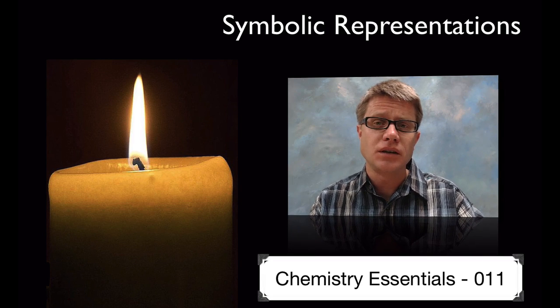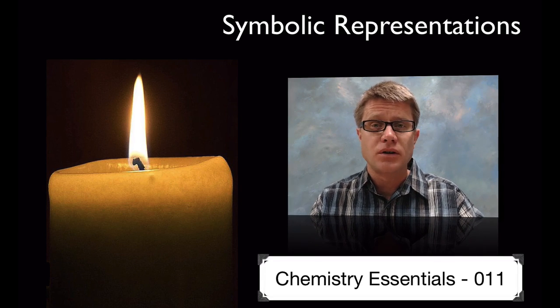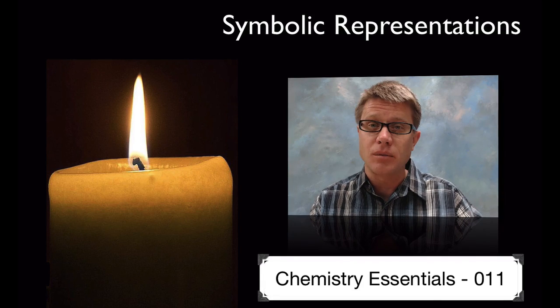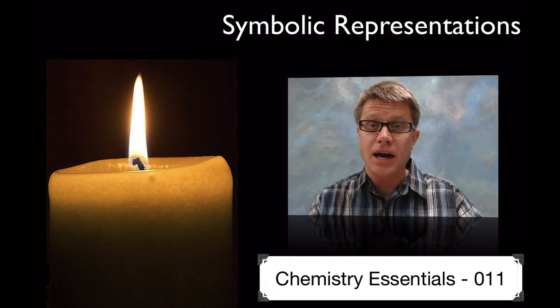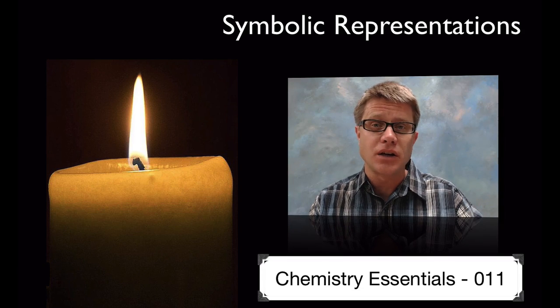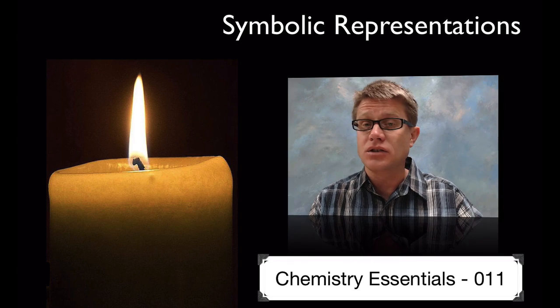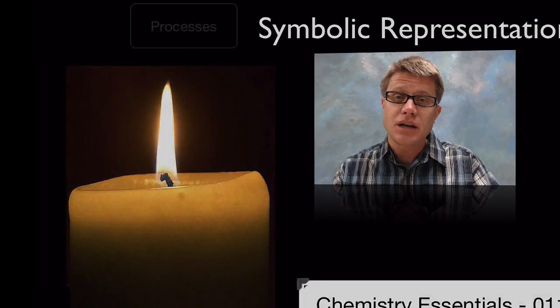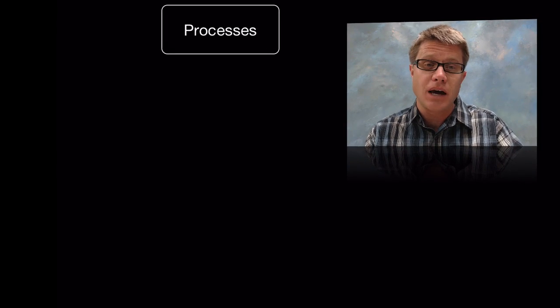When you look at a candle burning, what you're seeing are processes at work. You're seeing both physical changes—the wax is melting to become a liquid and then becoming a gas. And then you're also seeing chemical changes as that wax combines with oxygen in the air. You're seeing combustion. And so what we can do in chemistry is use symbolic representations of that to show conservation in mass.